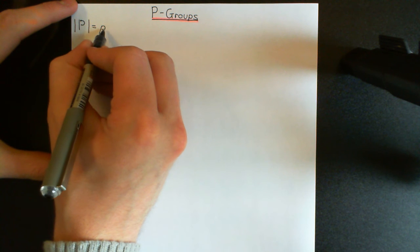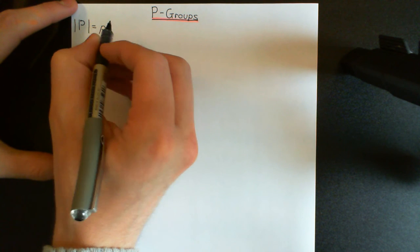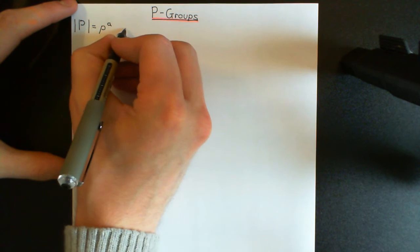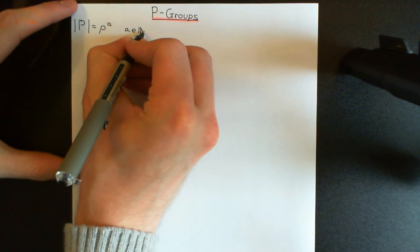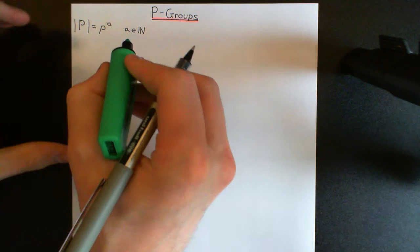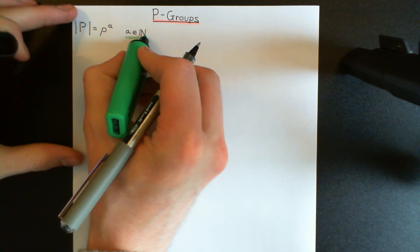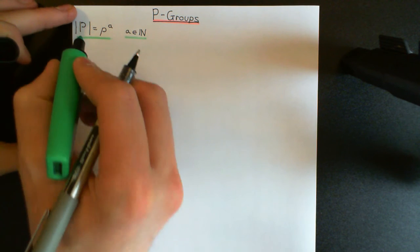This prime I'll denote little p — so it's just some arbitrary prime natural number — to a certain power, little a, where little a is a natural number, so a counting number: 1, 2, 3, 4, 5, 6, 7, 8, 9, 10, etc. That is the definition of a P-group: a group where the order of the group is some prime number to a certain power.